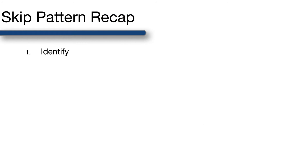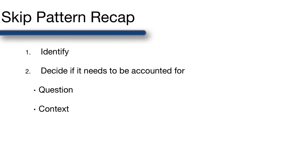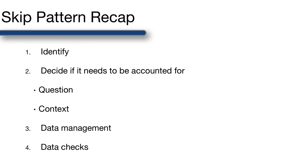Before we wrap up, let's quickly recap what we learned in this video. Your first task is just to identify the skip patterns. Then you must decide if you need to do anything to account for the skip pattern — I suggest doing this by thinking about your research question and the other information available to you in the context of the entire dataset. Once you've decided that you need to account for the skip pattern, you can do so using the conditional processing techniques you already know. Finally, it's always a good idea to do data checks. I've been working with data for many years and I still catch myself making mistakes all the time during my data checks, so please don't forget to do them. And with that, we've concluded our discussion of skip patterns.